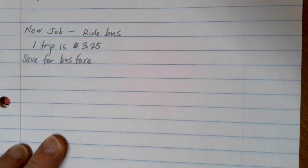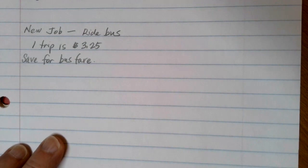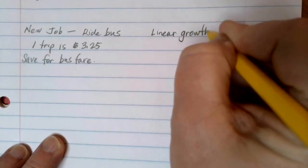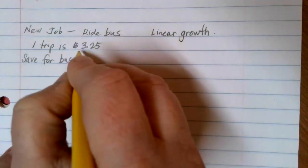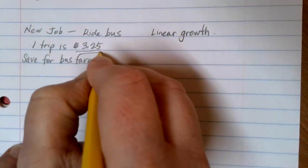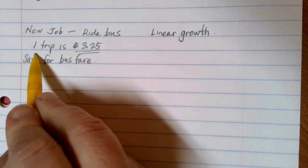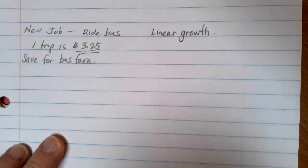So let's try to write a linear equation model, a linear growth model, for this situation. Why do I know that it's linear growth? Because I have a constant numbered rate of change, $3.25 per one ride on the bus. So that's why I know it's going to be linear.